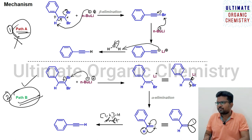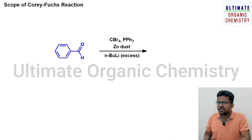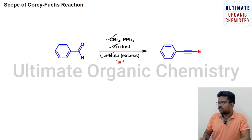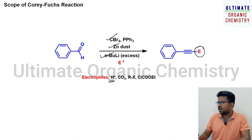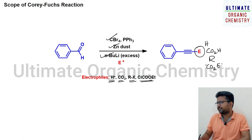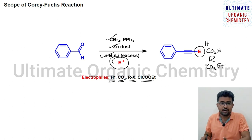The scope of the Corey-Fuchs reaction is significant. With conditions of CBr₄, triphenylphosphine, zinc dust, and excess n-butyllithium, changing the electrophile gives different products at the terminal position of the alkyne. Using acid as electrophile gives a hydrogen atom; using CO₂ gives a carboxylic acid; using an alkyl halide gives an alkyl group; and using ethyl chloroformate gives an ester. This variability makes it very important in synthetic organic chemistry.